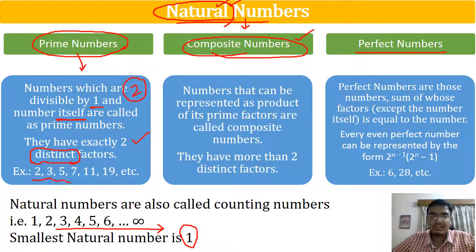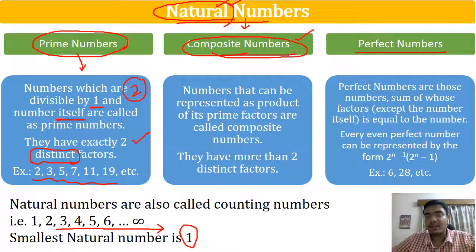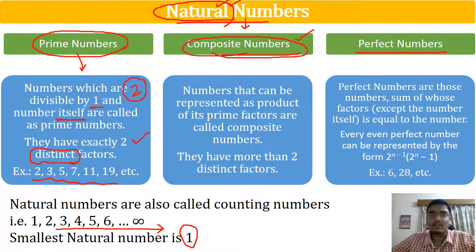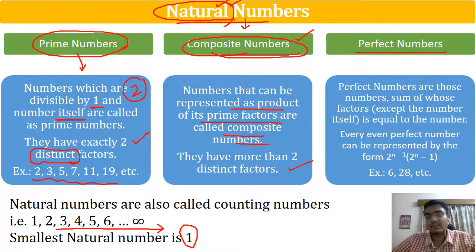Examples of prime numbers are 2, 3, 5, 7, 11, 19, and so on. Then we have composite numbers — numbers which are not prime, except 1. So we have 1, prime numbers, and composite numbers, because 1 is neither prime nor composite. Numbers that can be represented as a product of their prime factors are called composite numbers. They have more than two distinct factors.